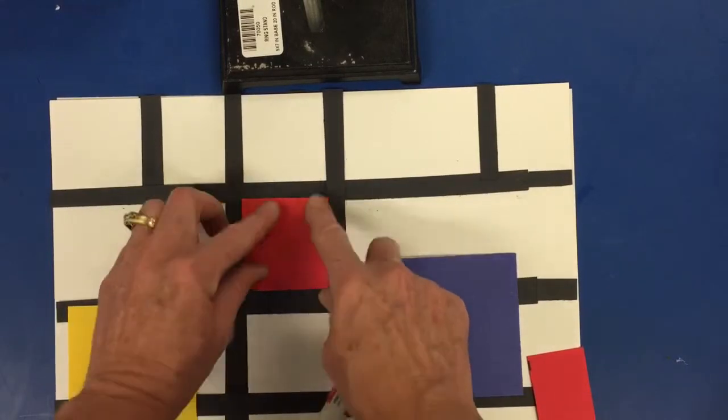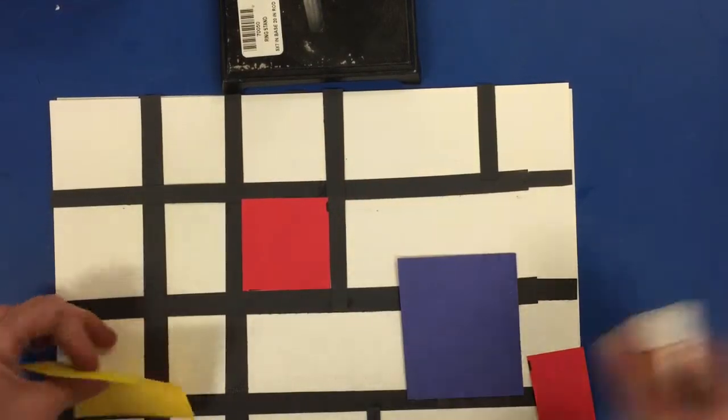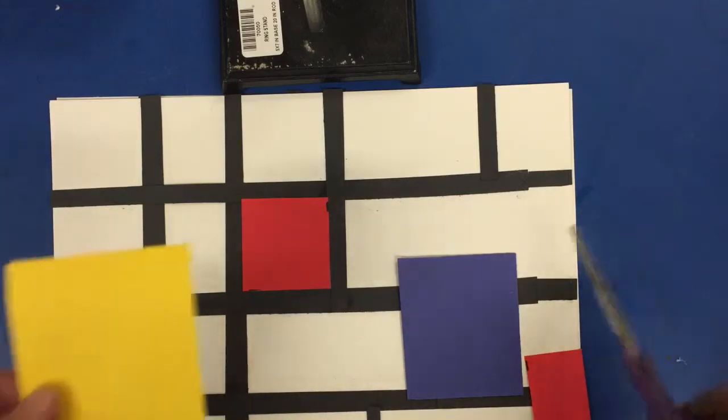Piet Mondrian was very interested in New York City where he lived after World War II.